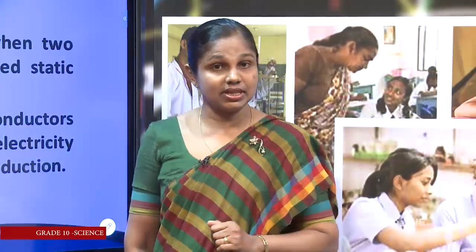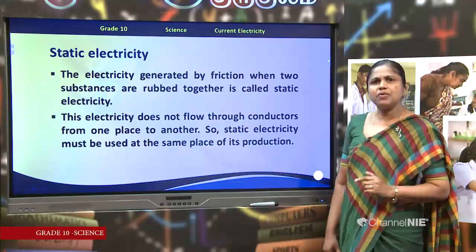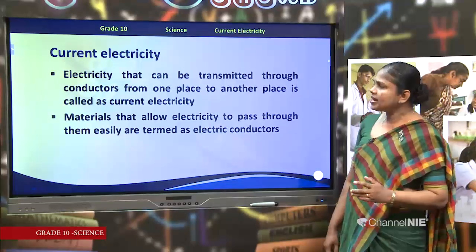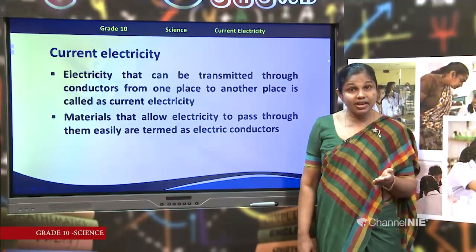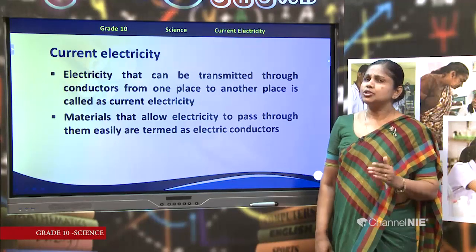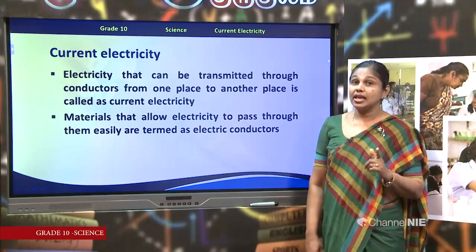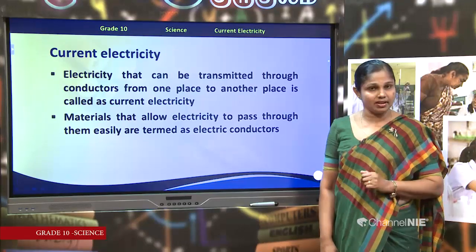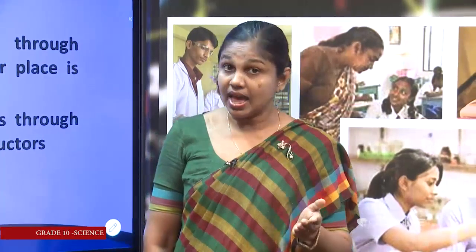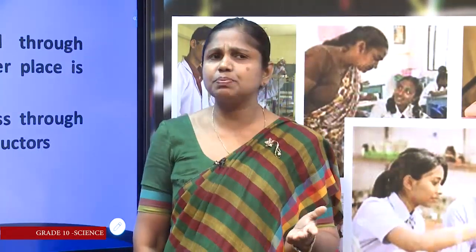Children, what are conductors? Conductors are materials that allow electricity to pass through them easily. We know that metals are very good conductors because electricity passes through metals very well. Why are metals very good conductors? Because they have free electrons in them.